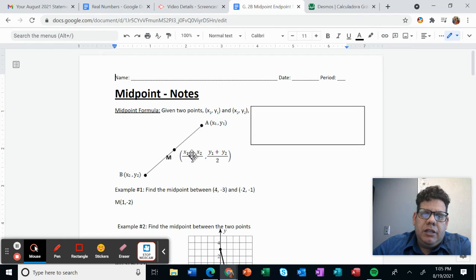And these little numbers right here, 1 and 2, those are referring to the first point, which is A. X1 is from this point, X2 is from this other point, Y1 is for the first point, and Y2 is for the second point.